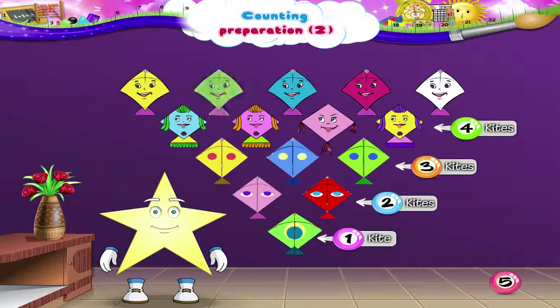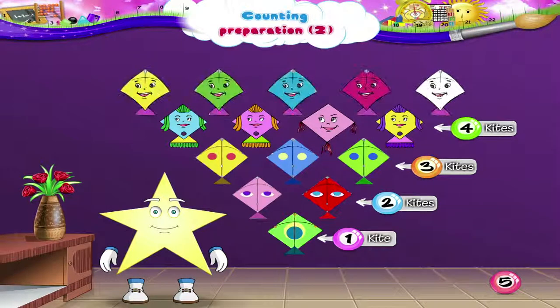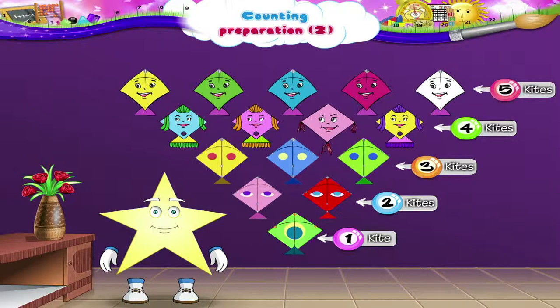1, 2, 3, 4, 5. These are 5 kites. Wasn't that so easy?